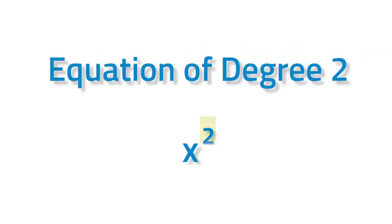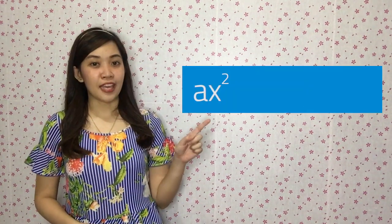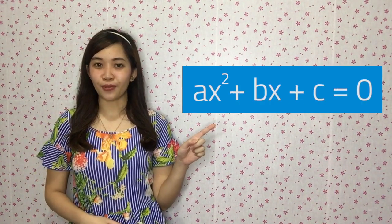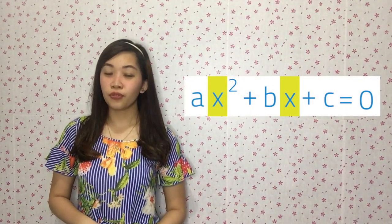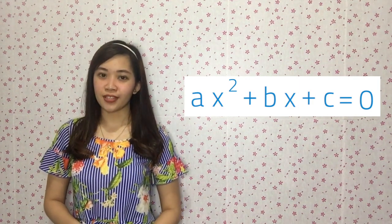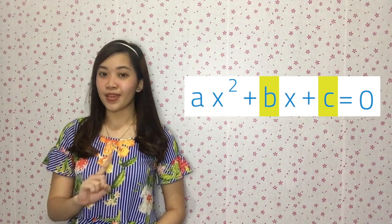It is also called an equation of degree 2 because of the exponent 2 on the x. Quadratic equations refer to equations with at least one squared variable, with the most standard form being ax² + bx + c = 0. x represents an unknown value or variable, while a, b, and c are coefficients. b and c can have any value, but a can't be zero.